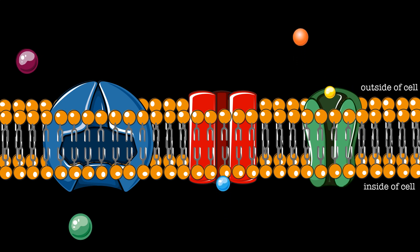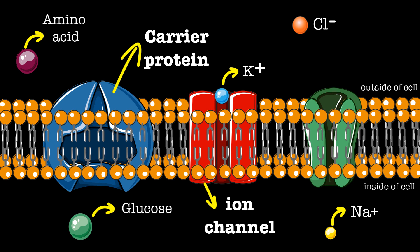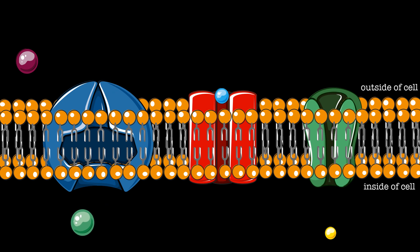Protein channels embedded in the membrane allow ions and small charged molecules to enter until a concentration equilibrium occurs. Glucose and amino acids require carrier proteins, and ions such as potassium and sodium require ion channels across the cell membrane. This process is referred to as facilitated diffusion and requires no energy.